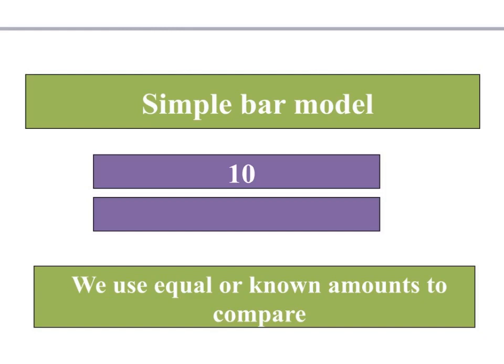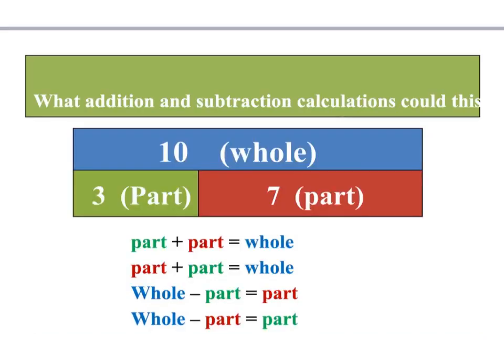So here's our simple bar model. It looks a little bit like an equal sign. We use equal or known amounts to compare. So if the top bar is 10, then we know that the bottom bar must also be 10 as it is the same size. So what addition and subtraction calculations could this picture represent? Well, we've got the two bars.